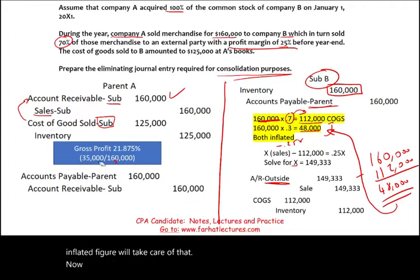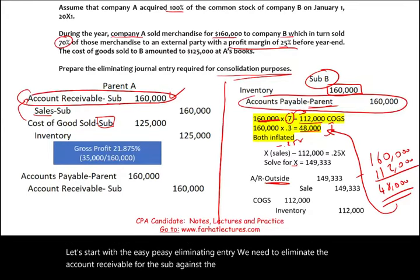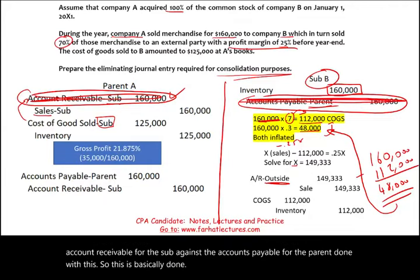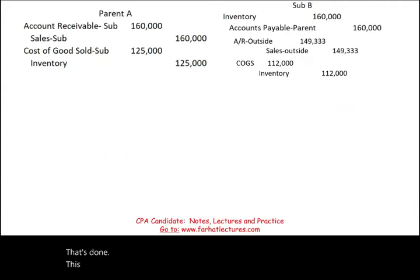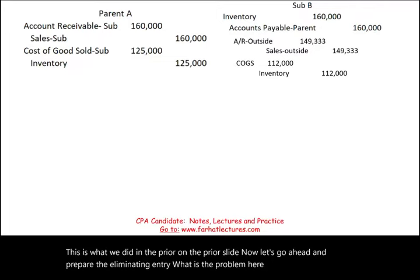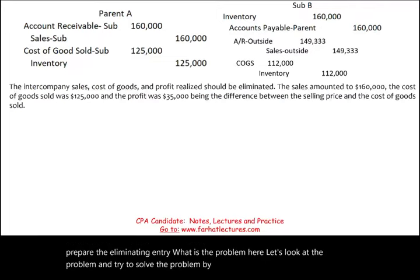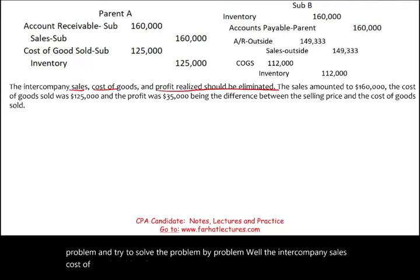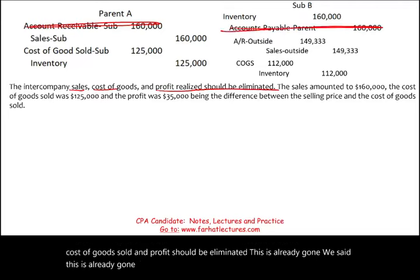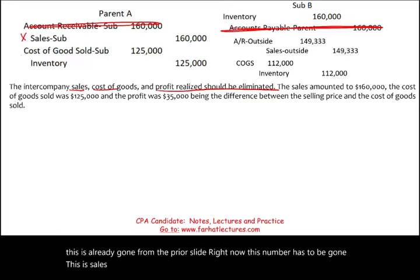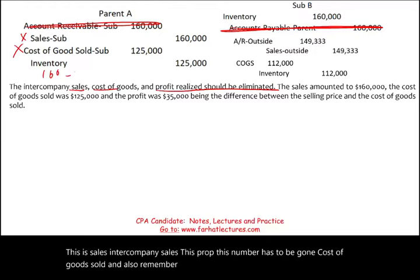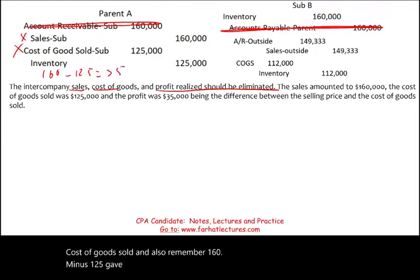Now let's start with the easy eliminating entry: we need to eliminate the accounts receivable for the sub against the accounts payable for the parent. Next, we address intercompany sales, cost of goods sold, and profit. The intercompany sales of $160,000 need to be eliminated, as does the intercompany cost of goods sold of $125,000. The profit of $35,000 ($160,000 − $125,000) is intercompany profit — but we must be careful since some goods were sold to an outsider.